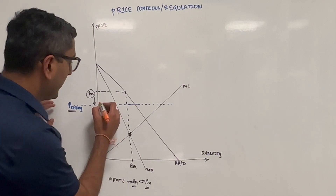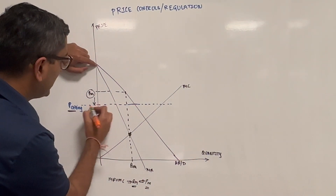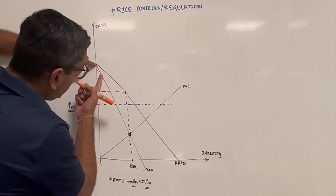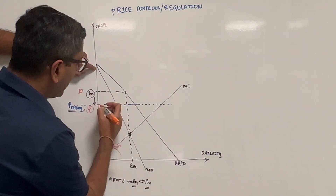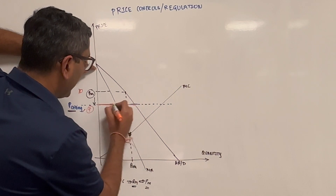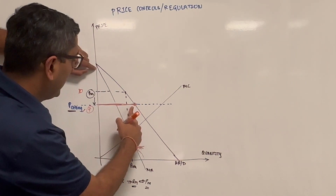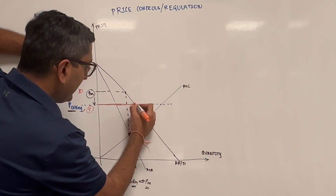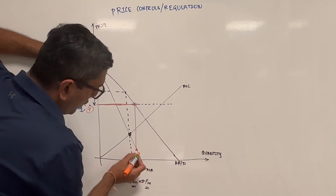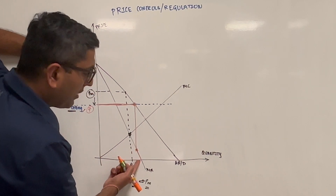What happens then is your marginal revenue is now going to be fixed. Initially the marginal revenue curve was this line here, but the government says — let's say this was ten dollars and the government says you can only sell it at seven dollars. So initially you were willing to sell at a lower quantity and get higher prices, but the government gives you seven dollars fixed. So your MR curve is now flat at seven dollars until it hits the demand curve, at which point it intersects the original MR curve.